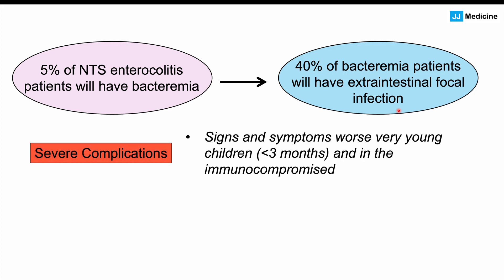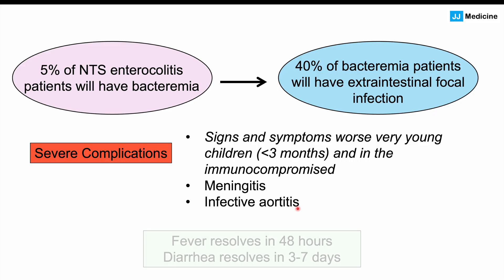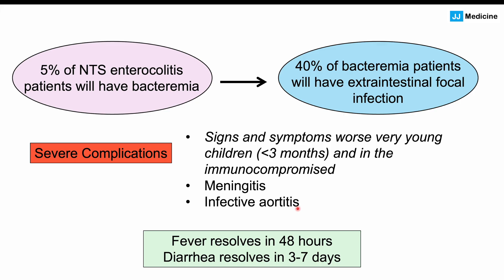Severe complications can occur, especially in patients who develop bacteremia. Signs and symptoms tend to be worse in very young children under 3 months of age and in the immunocompromised. Specific complications include meningitis and infective aortitis — inflammation of the aorta. These are more likely in very young, immunocompromised, or sickle cell disease patients. In relatively healthy patients, however, the infection is self-limiting: fever typically resolves within 48 hours and diarrhea resolves within 3 to 7 days.